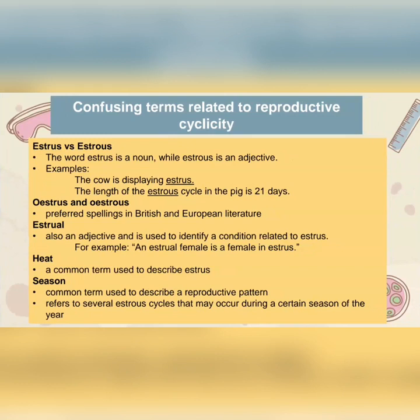Now let's proceed to confusing terms related to reproductive cyclicity. The terms estrus versus estrous: the word that ends in -us is a noun, while the one that ends in -ous is an adjective. For example: 'the cow is displaying estrus' and 'the length of the estrous cycle in the pig is 21 days.' We also have oestrus and oestrous, which are the preferred spellings in British and European literature. Another term is estroal — an adjective used to identify a condition related to estrus; for example, an estroal female is a female in estrus.